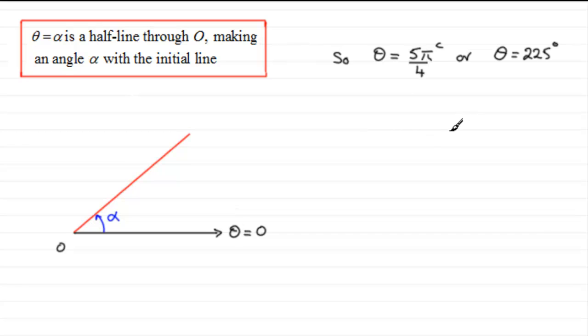And if we were to draw this, what we would have then is our initial line. We'll just work with the radians version. So we've got theta equals zero here, zero radians. We've got our pole, O.